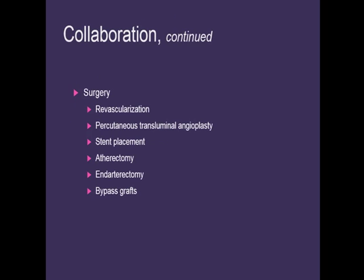Surgery options include opening up blocked areas to restore blood flow. Angioplasty is no longer just for coronary arteries — any blocked artery can be opened, and stents can be placed to keep the artery open. Atherectomy involves removing or breaking up clots using lasers. Endarterectomy removes plaque that has built up, such as carotid endarterectomies. Bypass grafts — femoral-popliteal bypass grafts, or fempops — are very common, bypassing the blockage to improve blood flow to the lower extremity.